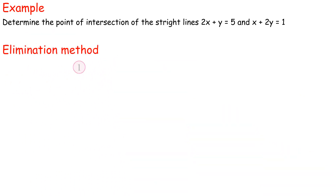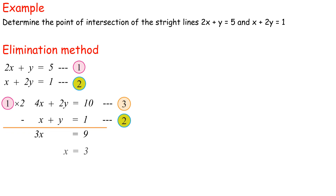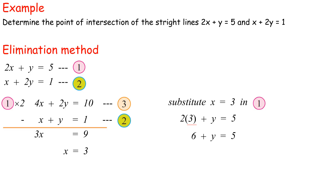Elimination method: 2x plus y equals 5 (equation 1), x plus 2y equals 1 (equation 2). Eliminating to find x equals 3. Substituting x equals 3 into equation 1: 2 times 3 plus y equals 5, so 6 plus y equals 5, giving y equals negative 1. Thus, point of intersection is (3, negative 1).